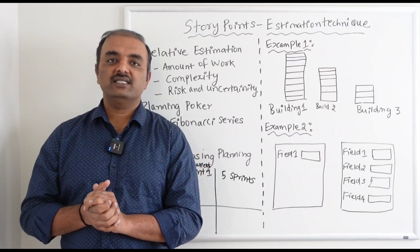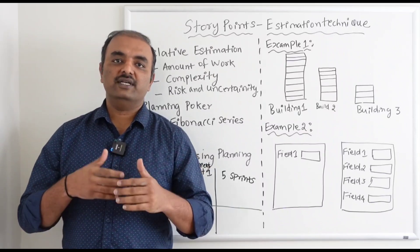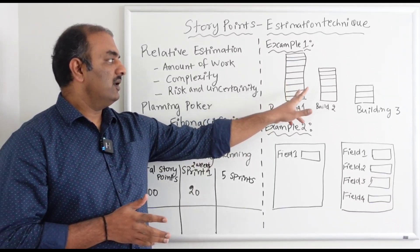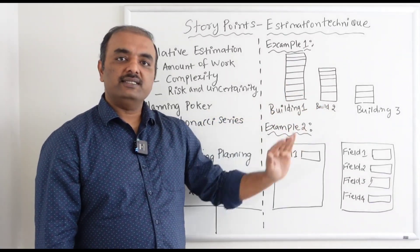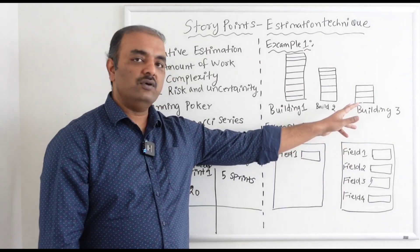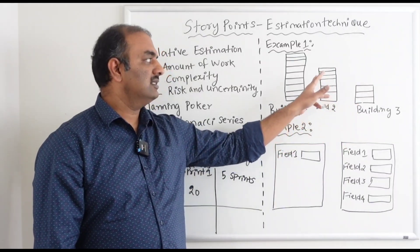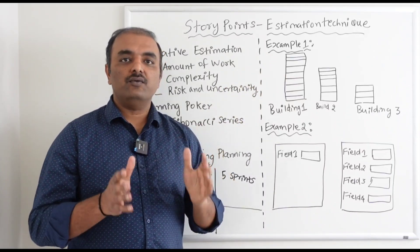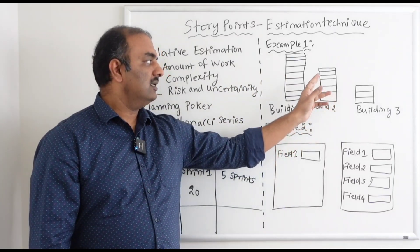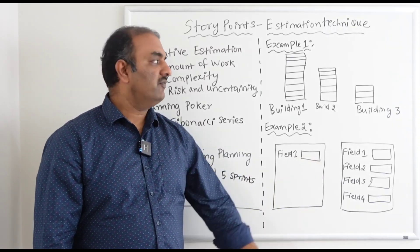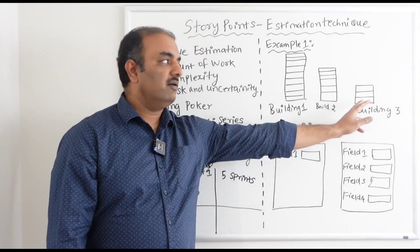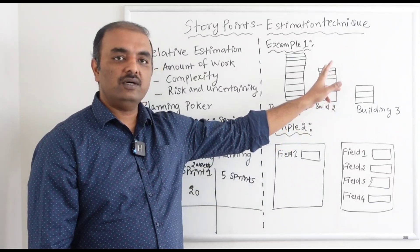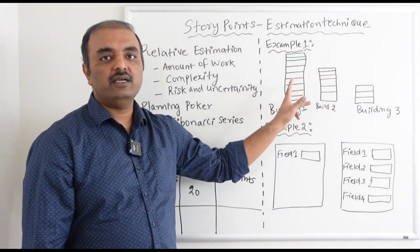Let's look at some examples of how you estimate stories using story points. Take example one, where you have three buildings. Building one is three floors, building two is six floors, and building three is nine floors. Based on the amount of work, if it takes one story point for the first building, then two story points for the second and three story points for the third.